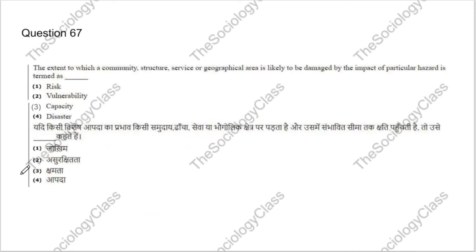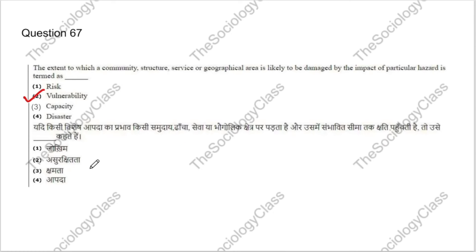Question 67: The extent to which a community, structure, service, or geographical area is likely to be damaged by the impact of a particular hazard is termed as what? Options: risk, vulnerability, capacity, or disaster. The correct answer is B — vulnerability.